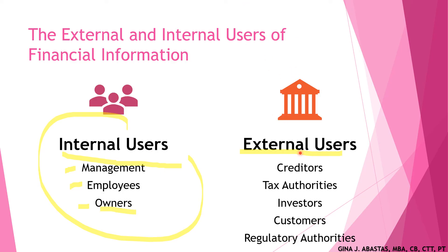For external users, these are individuals and organizations outside the company who want financial information about the company. These users are not directly involved in managing and operating the business, unlike internal users. The two most common types of external users are potential investors and creditors. Potential investors use accounting information to make decisions to buy shares of a company. Creditors, such as suppliers and bankers, use accounting information to evaluate the risk of granting credit or lending money.